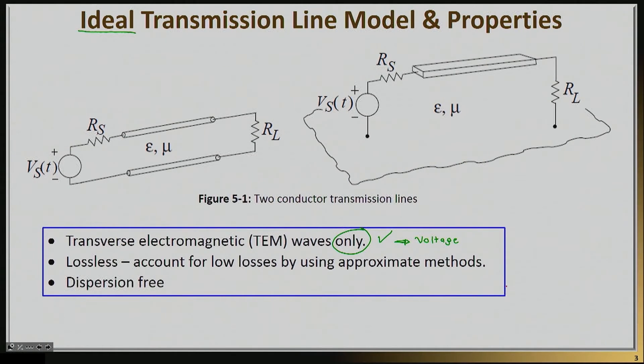No multi-mode transmission lines are basically allowed. No multi-mode effects are basically allowed in the ideal model. Clearly, if you had many modes, many propagating modes, you would have many different effects. For example, multiple propagation constants, multiple phase velocities, and again it becomes a mess.